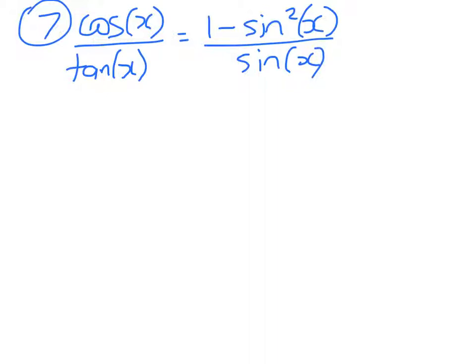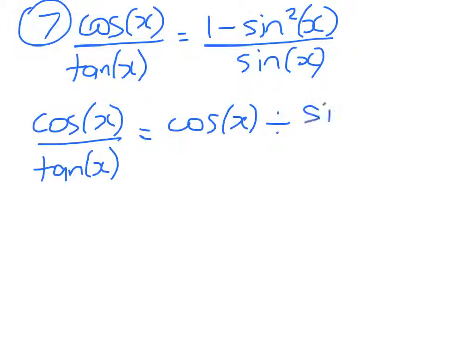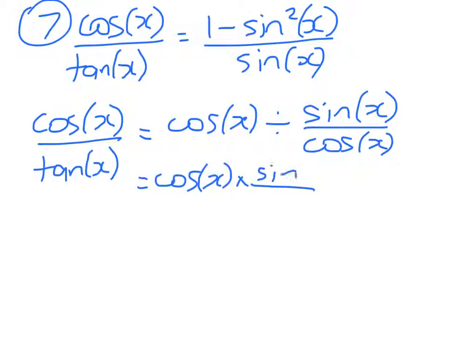Right, so start on the left and work to the right. Cos(x) over tan(x) is equal to cos(x) divided by sin(x) over cos(x) which equals cos(x) times sin(x) over cos(x).